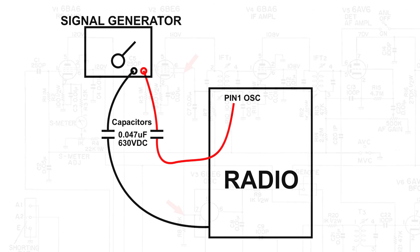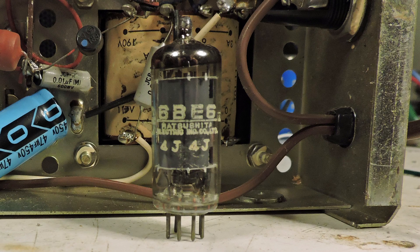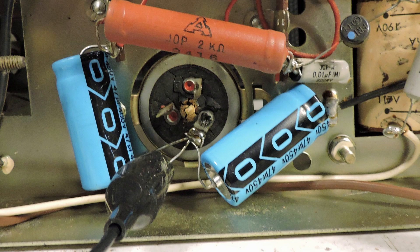Here's the setup. I'm going to use a signal generator through two capacitors, one on each lead. That ensures that my signal generator is 100% isolated from the radio. Here I've pulled out the oscillator tube.